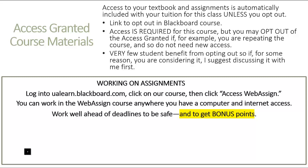At the end of every semester, students ask if there's anything they can do for extra credit. The answer is no. However, there is something you can do continuously throughout the semester: keep ahead of homework deadlines. If you finish any part of a homework assignment at least 24 hours before the deadline, you'll get a 10% bonus for that part. Even if you only complete three questions early, you get the 10% bonus on those three questions.